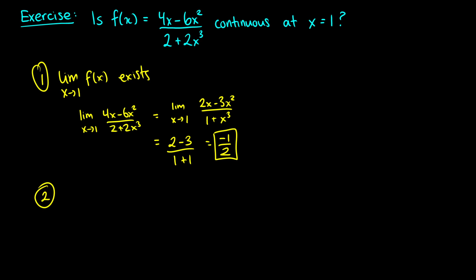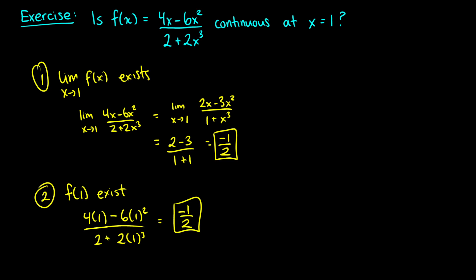Now does f of one exist? Plugging in: four times one minus six times one squared over two plus two times one cubed equals four minus six over two plus two, which is also negative one half. So f of one exists and equals negative one half. Is it continuous at x equals one? Yes, because the limit as x approaches one exists, f of one exists, and they are equal to each other. Therefore, f is continuous at x equals one.